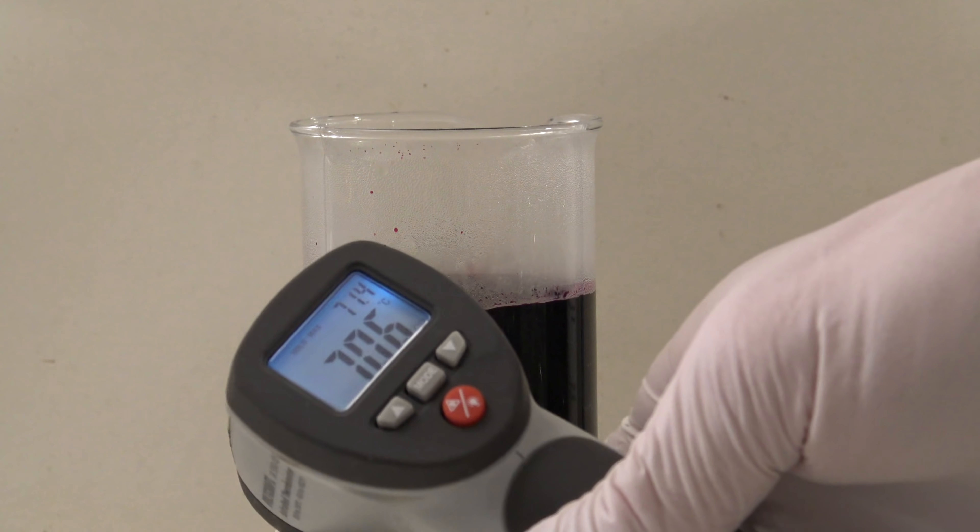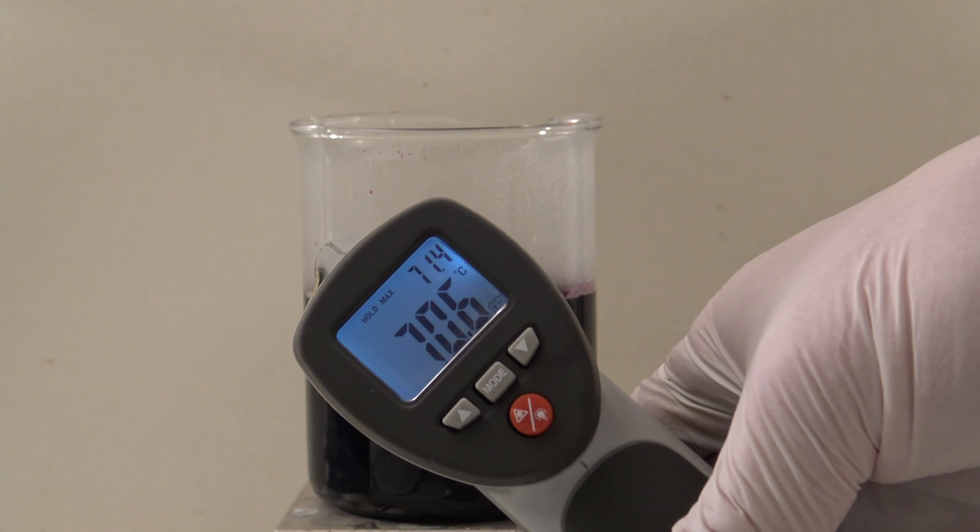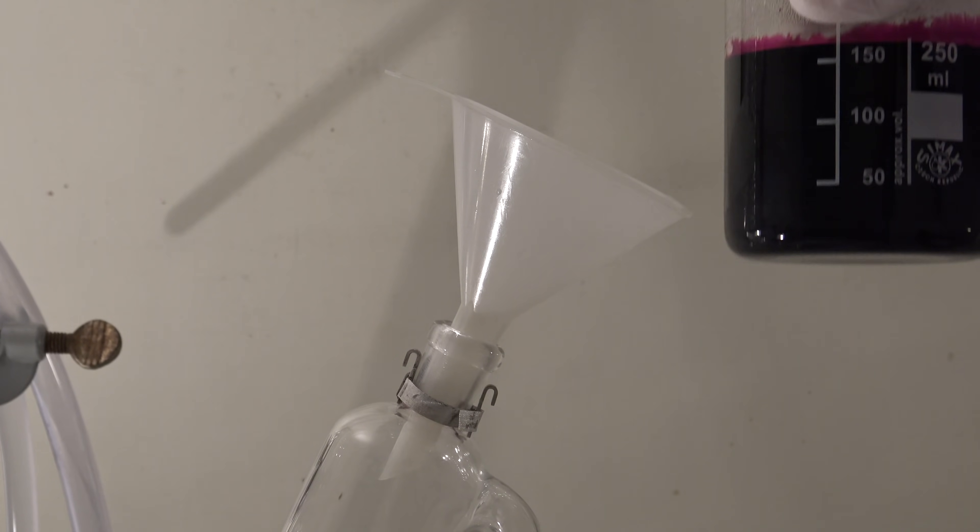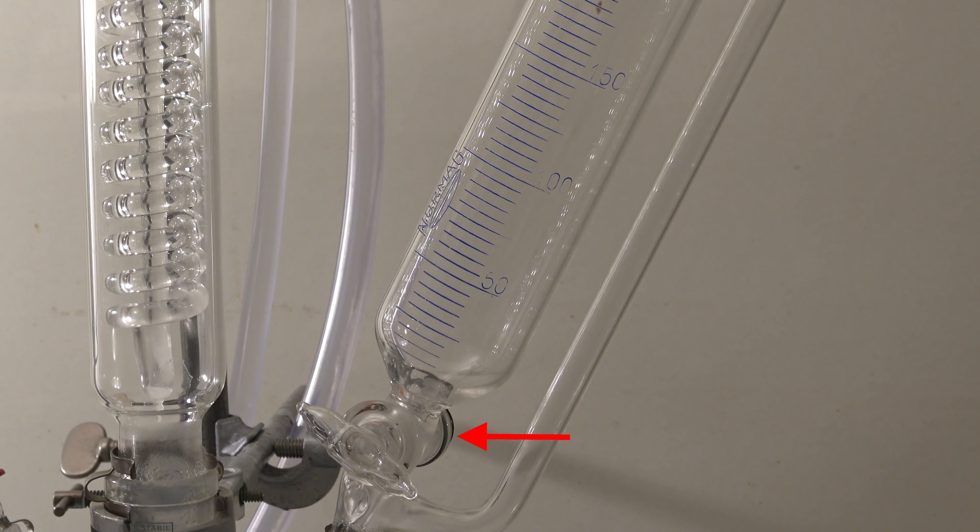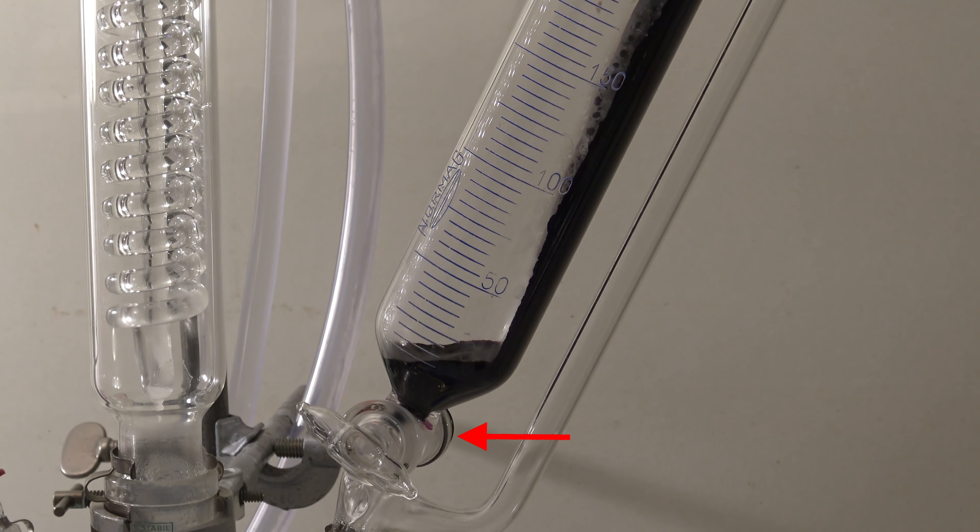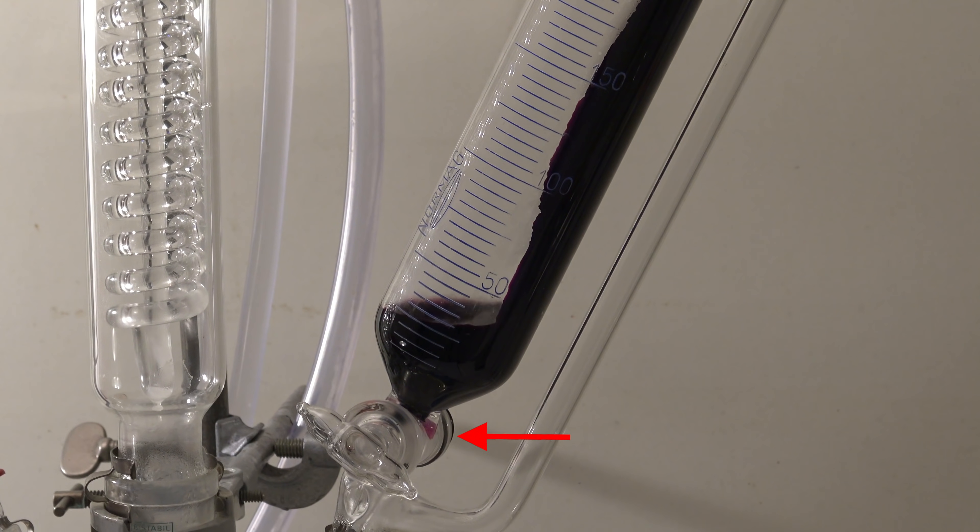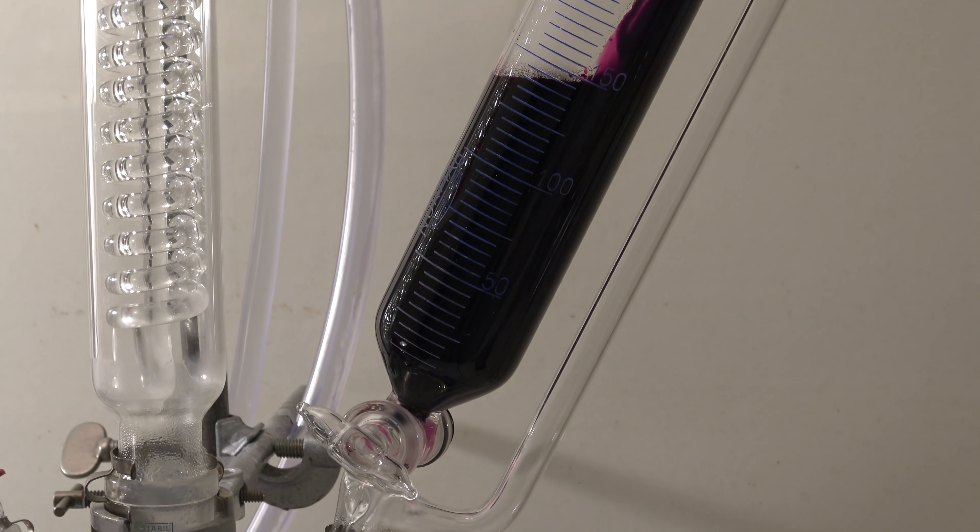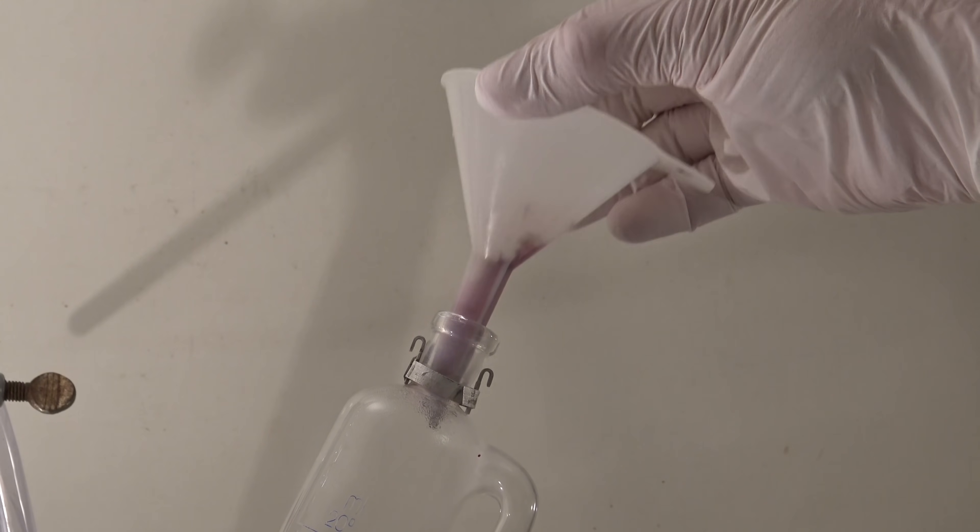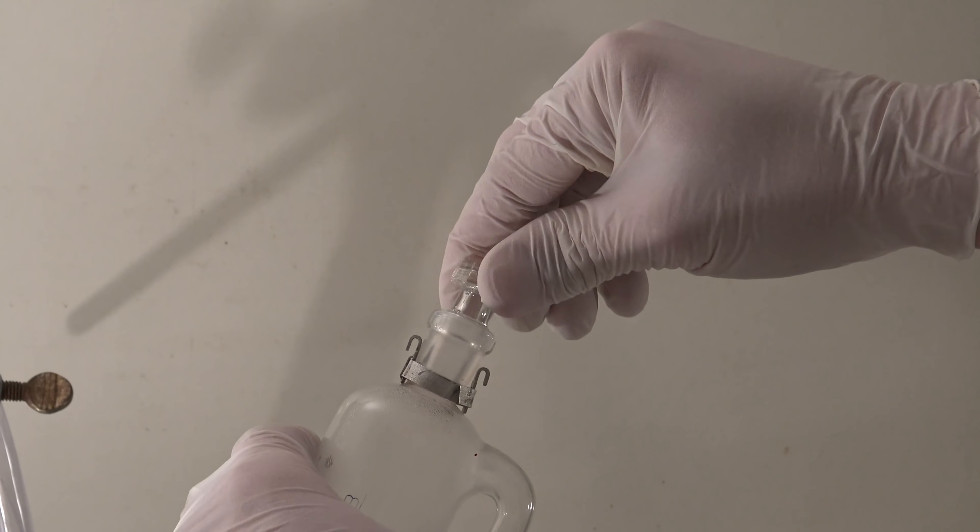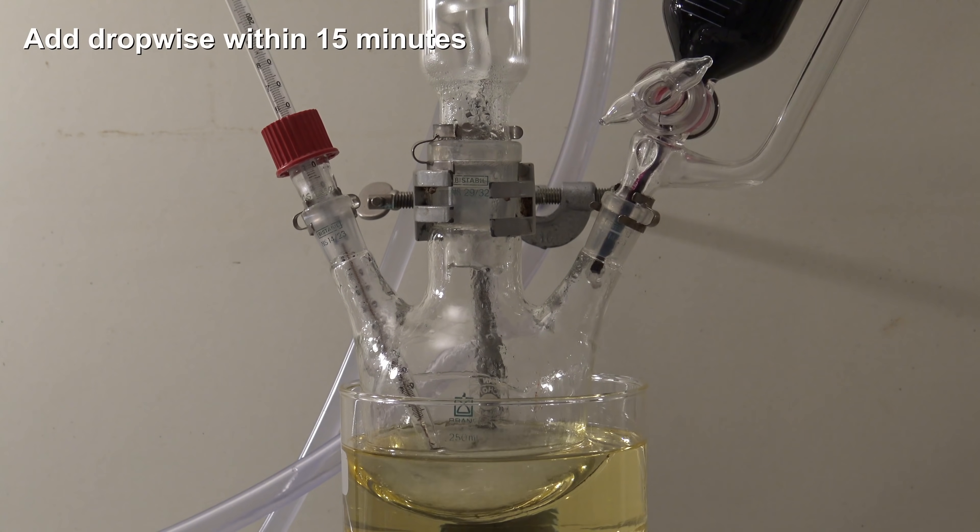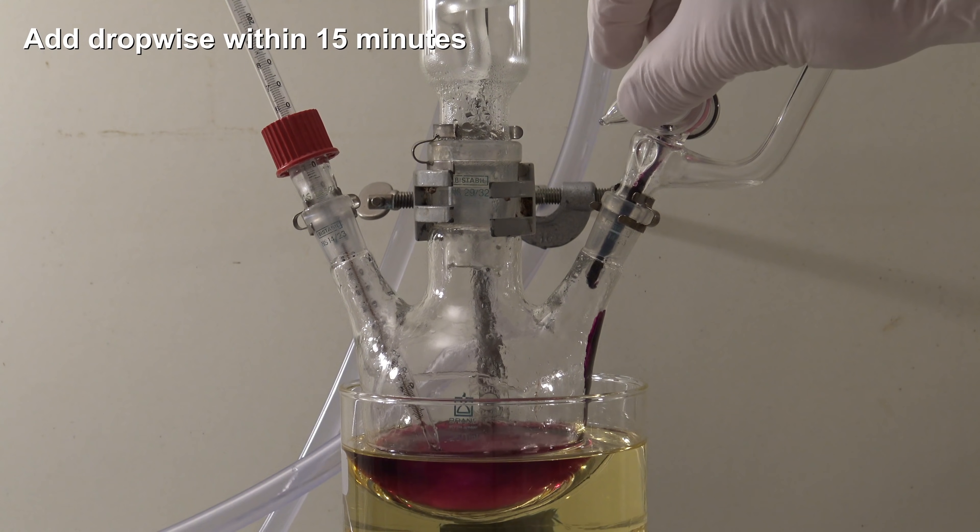When both solutions had reached their temperature, the permanganate solution was added to the dripping funnel. It could be seen that the stopcork was not sealing properly, but this was not a problem. Then the solution was added dropwise to the boiling mixture within 15 minutes.